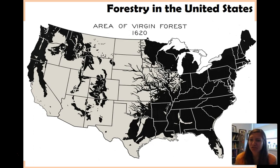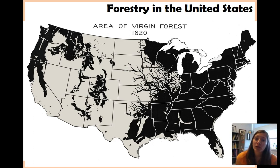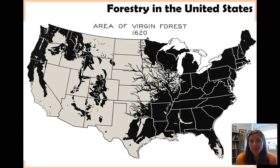As you can see, pretty much east of the Mississippi River it's 100% forested. Out in the west where it's a lot drier, we see less, but we still have a fair number of forests in the west as well.